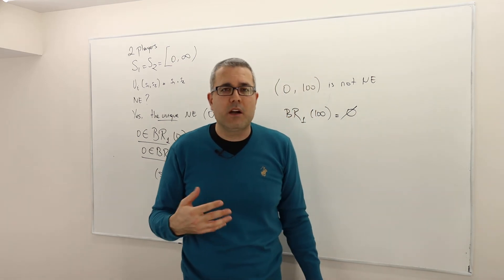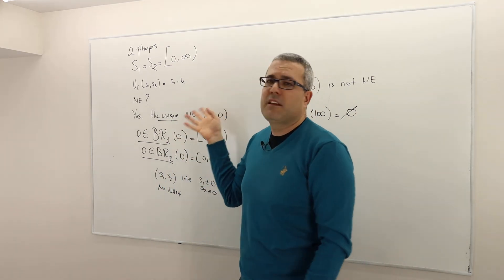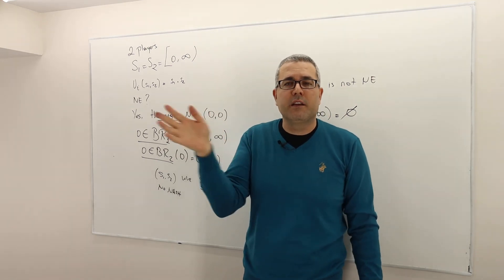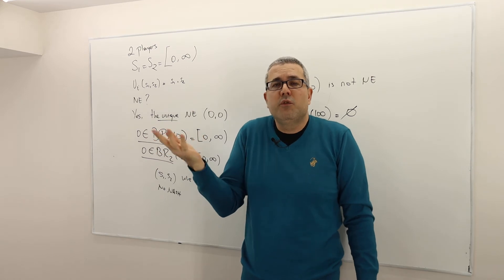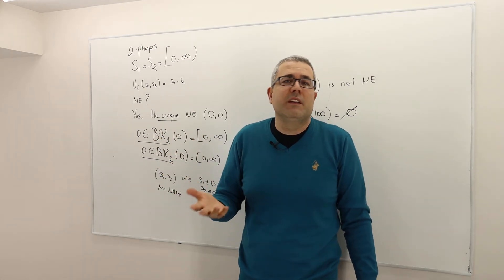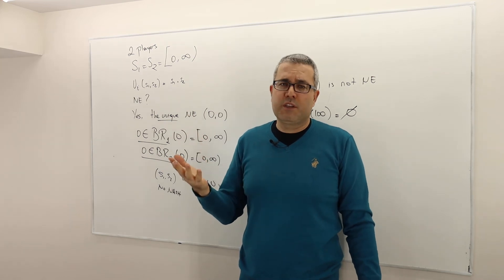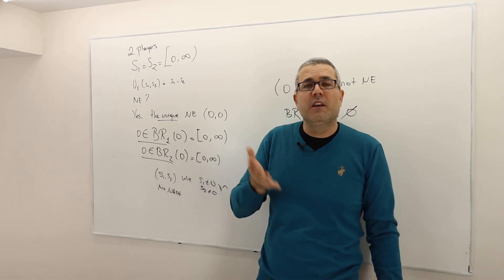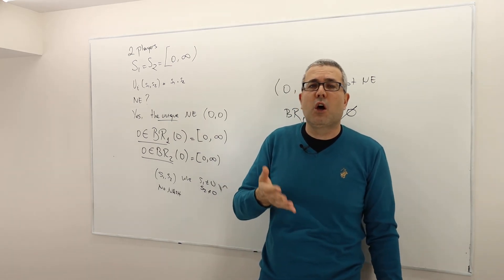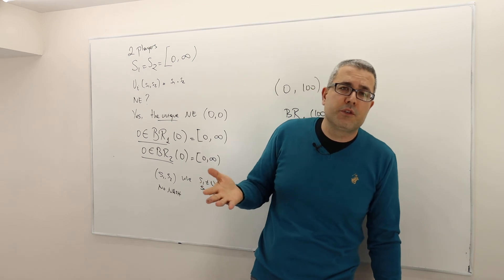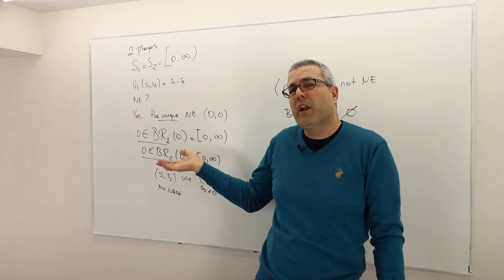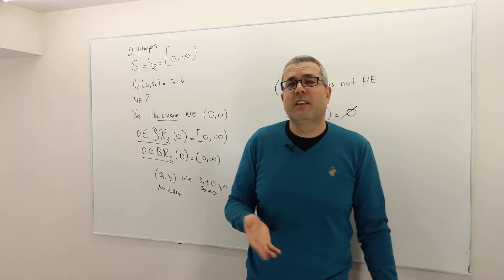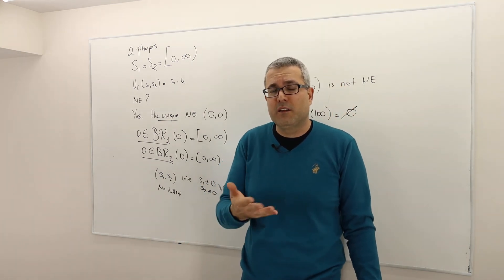I like this example partly because it shows that in a game like this — just select a number higher than or equal to zero — if two guys play this game, they would probably select some large numbers, but no one would select zero-zero. So it basically shows that Nash equilibrium is a solution concept with its own flaws; it's not an appropriate solution concept for all types of games. This is just one example where it really doesn't make sense, so maybe we should be looking at different solution concepts other than Nash equilibrium.